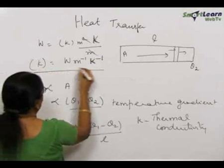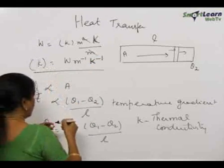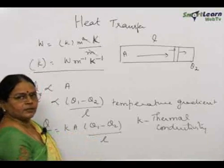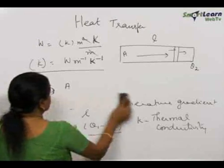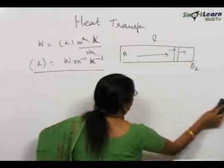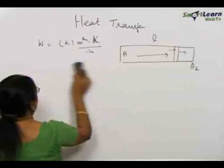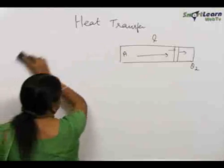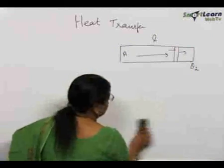Different metals have different thermal conductivity. Metals are good conductors of heat. The main mode of transfer of heat in a metallic rod is by conduction.